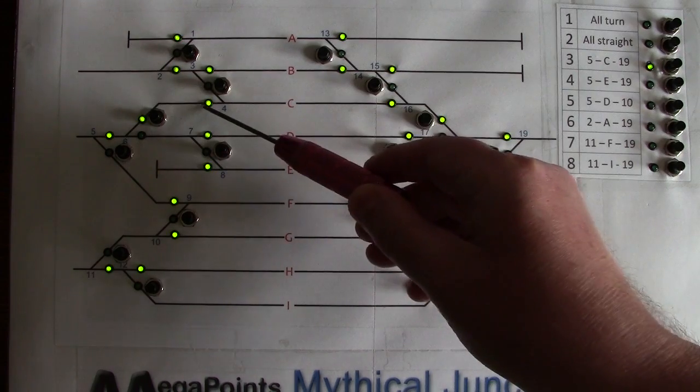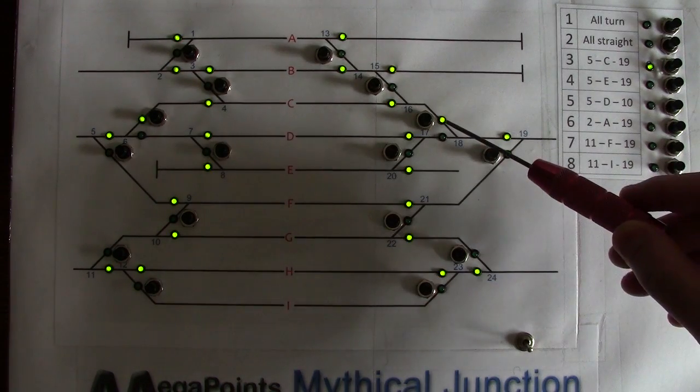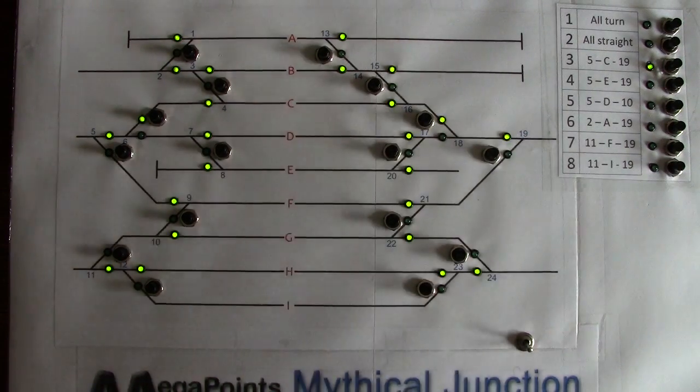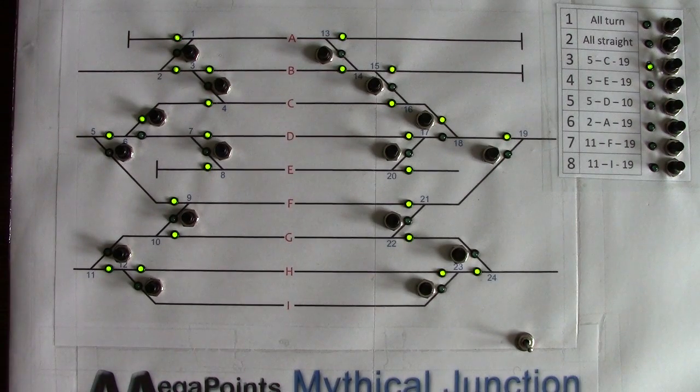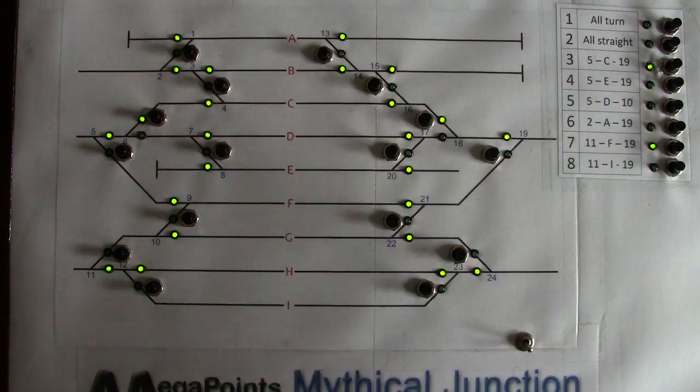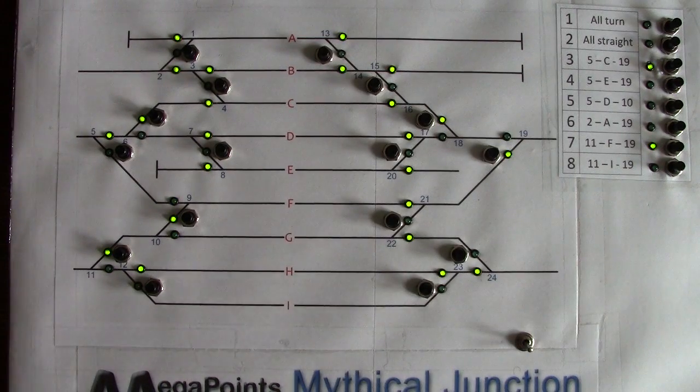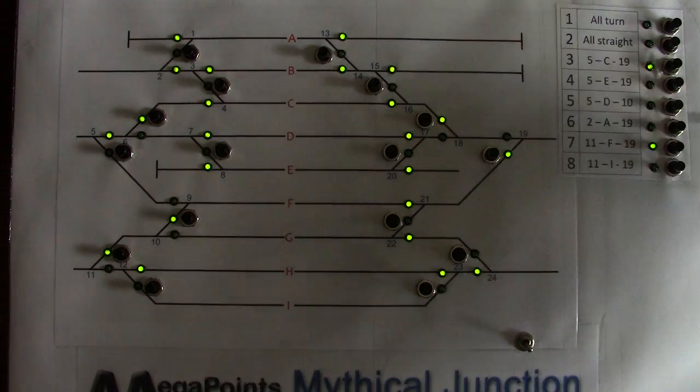It's possible to have multiple routes selected at the same time as long as they don't have any components that overlap. For example, route three was flashing then because I've activated route seven, which is eleven via F to nineteen, but nineteen